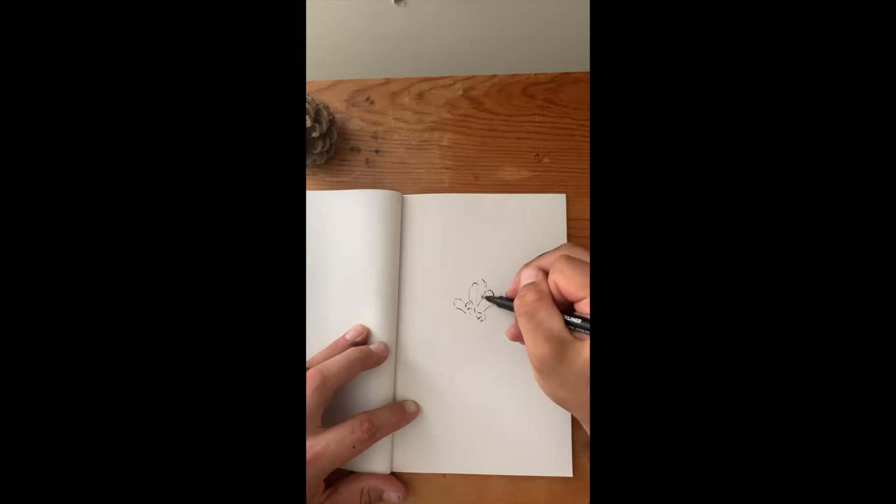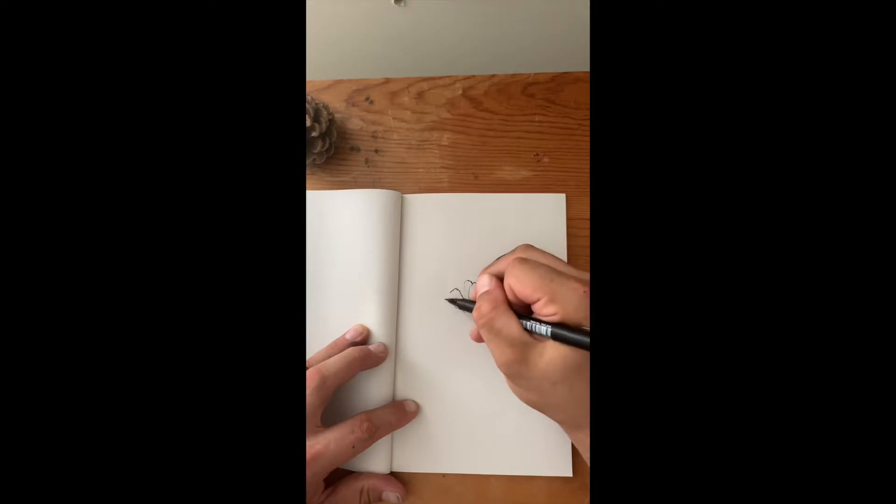You can see that the shapes in the pinecone start to kind of flower out, like a blooming onion if you've ever been to an outback steakhouse. So starting to get that structure down.